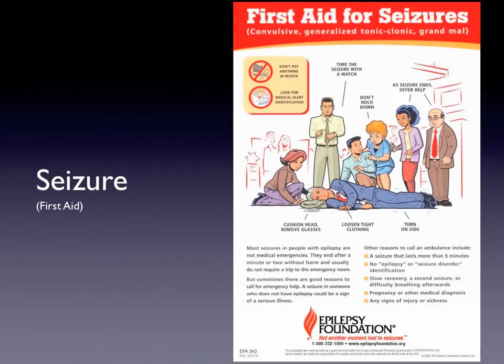First, don't put anything into their mouth. It is possible they may bite their tongue and bleed, but that's why you place them in the recovery position. Look for a medical identification alert bracelet or necklace. Time the seizure with a watch — if it lasts more than five minutes, immediately call 911. Don't try to hold the person down; just make sure they don't hit things that might injure them. For example, use a food tray to prevent their arm from directly contacting a bolted table leg — but don't hold the arm still.